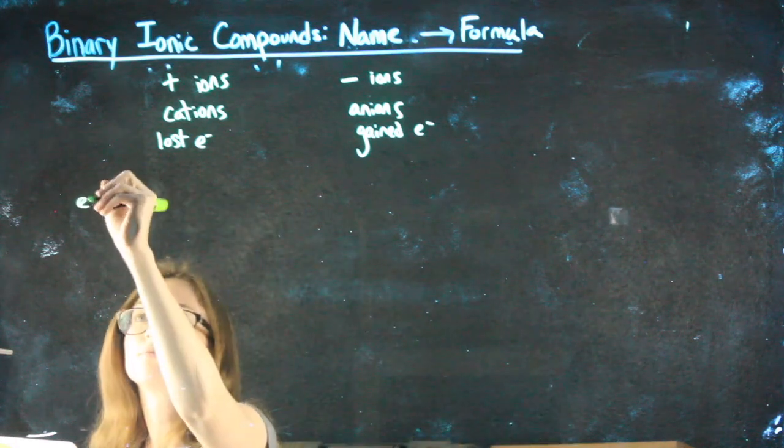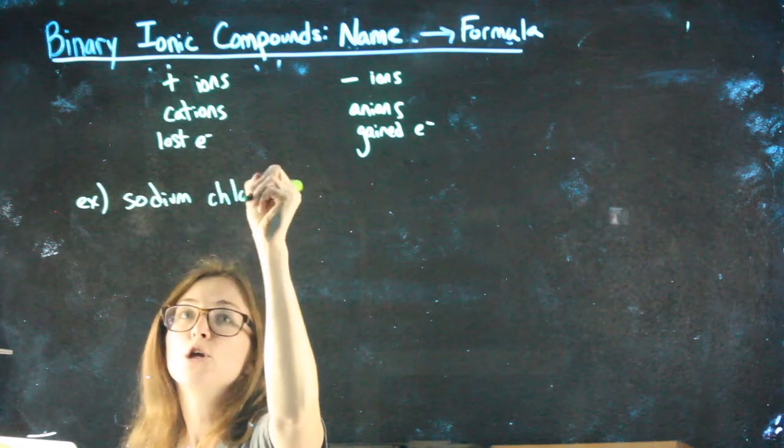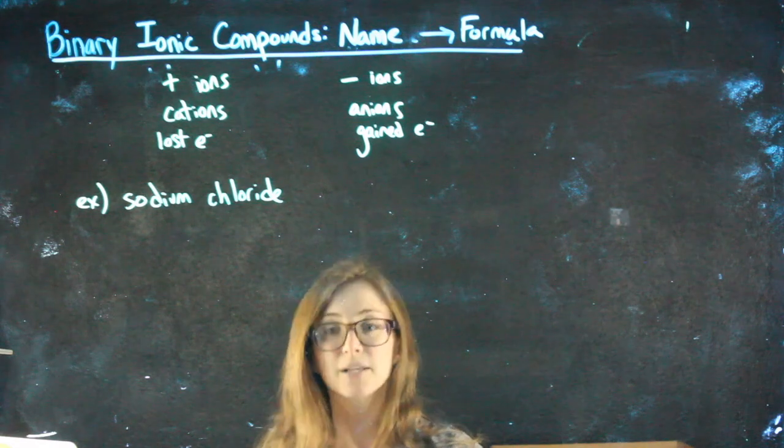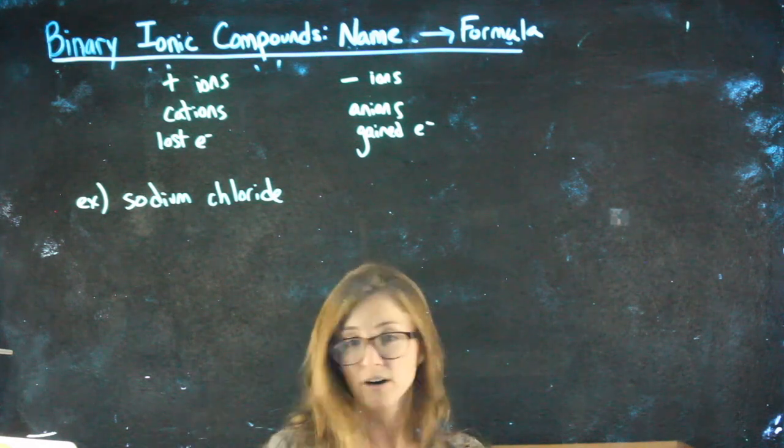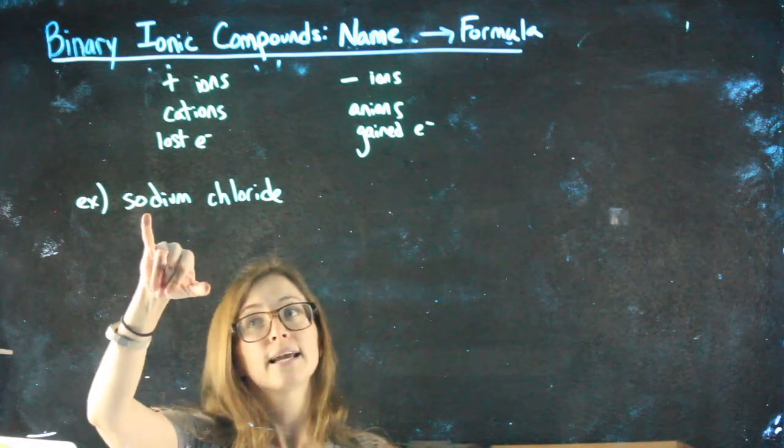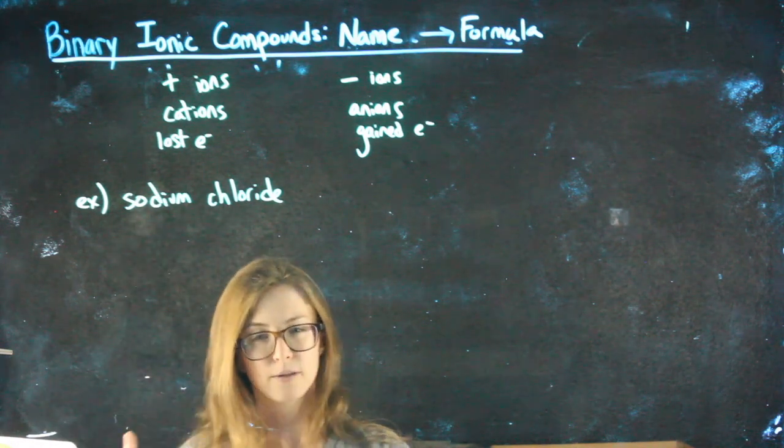Where the same number of electrons that have been lost have been gained, we don't ever just have random electrons not having a place to go when we're talking about ionic compounds. I'll show you a few examples and you'll need your periodic tables handy for this. So, sodium chloride. You probably already know that the answer for this one is going to be NaCl, but let's look at how I get that and why there aren't any subscripts.